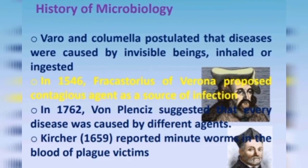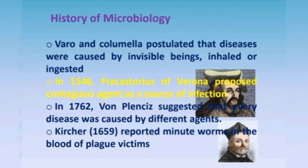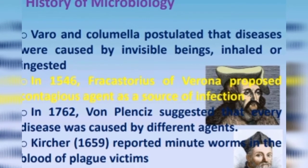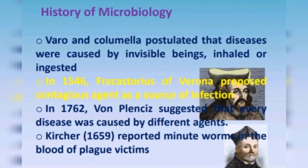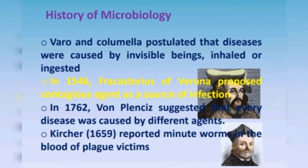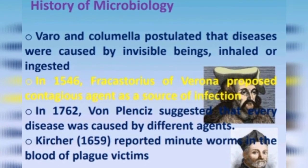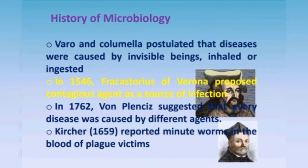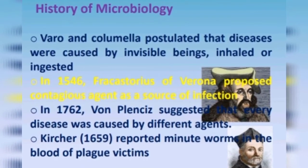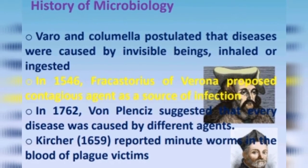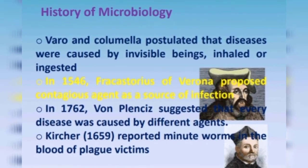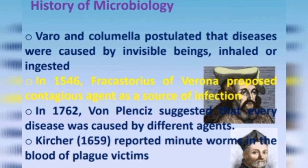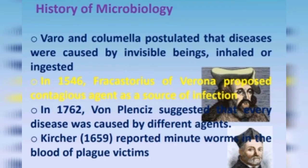Varro and Columella postulated that diseases were caused by invisible beings inhaled or ingested. In 1546, Fracastorius proposed contagious agents as a source of infection. In 1762, Vaughan Plenciz suggested that every disease was caused by different agents. In 1659, Kircher reported minute worms in the blood of plague victims.